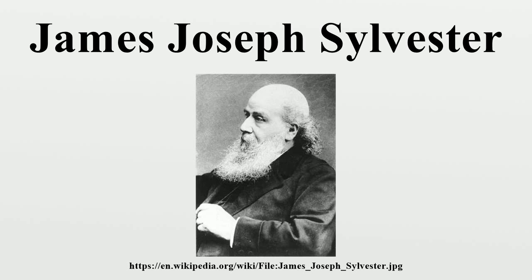In 1878, he founded the American Journal of Mathematics. The only other mathematical journal in the U.S. at that time was The Analyst, which eventually became the Annals of Mathematics. In 1883, he returned to England to take up the Savilian professorship of geometry at Oxford University.